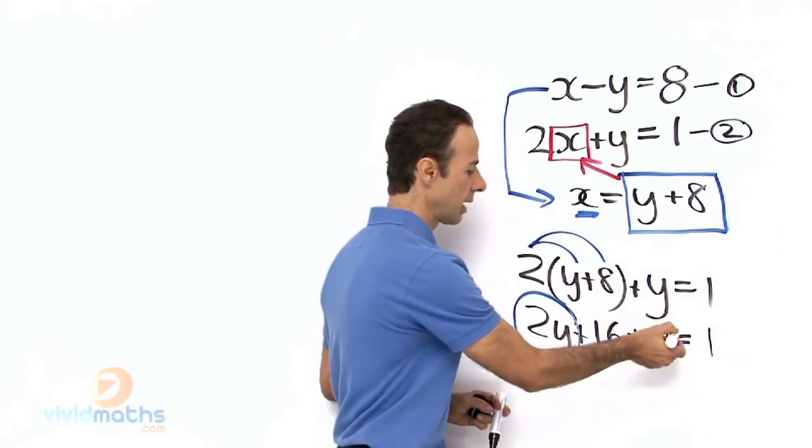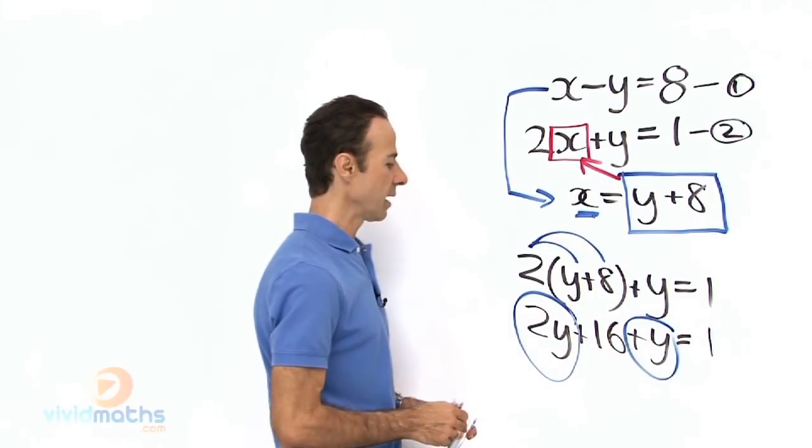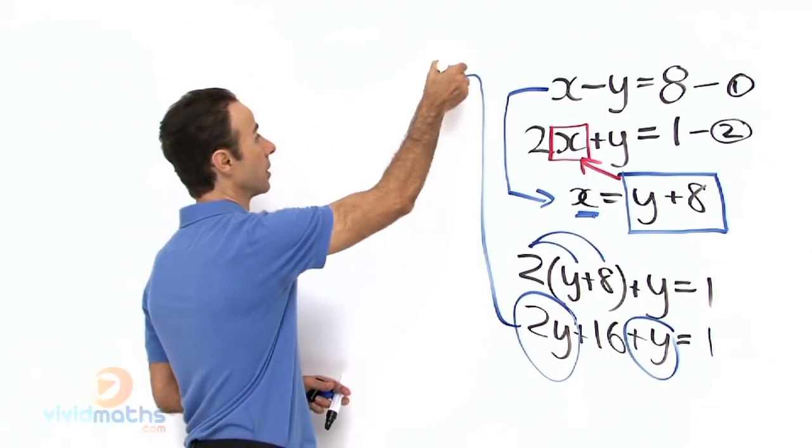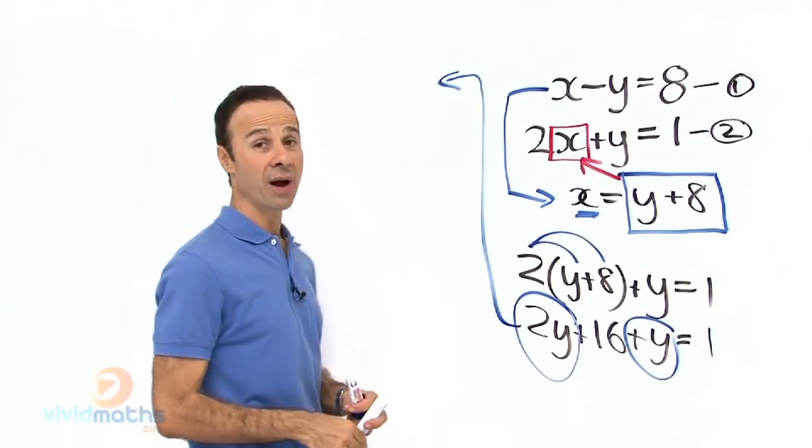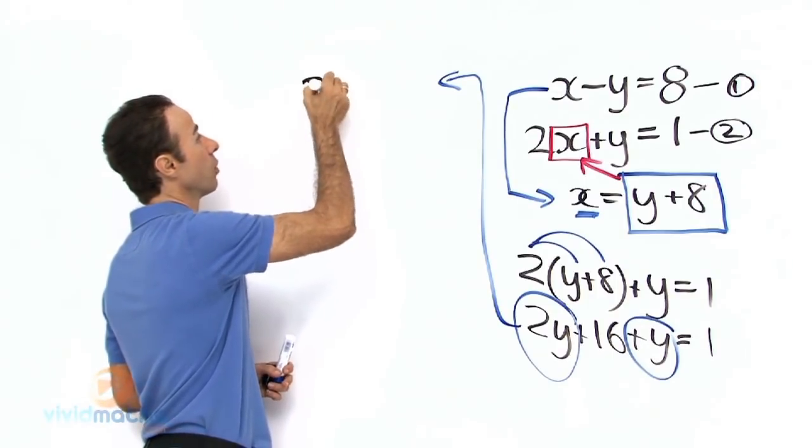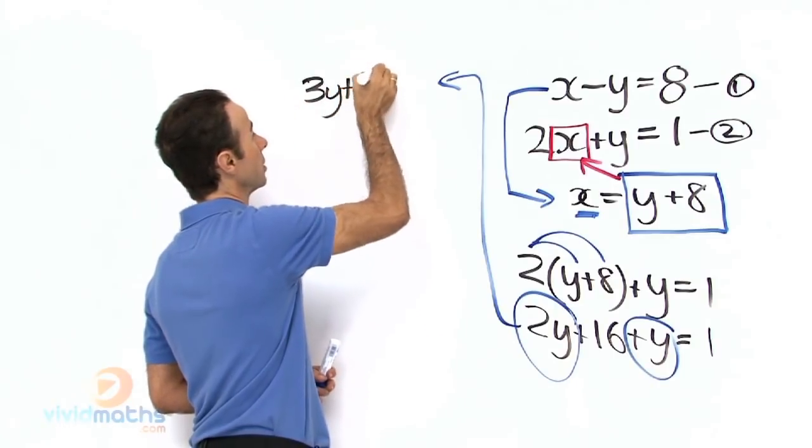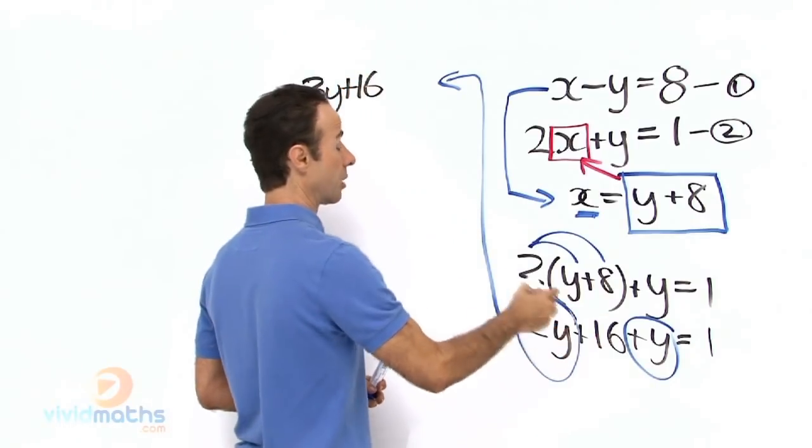We have 2y here and we have a y there. Adding them together, 2y plus y is 3y. So 3y plus 16 equals 1.